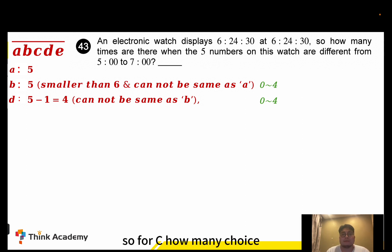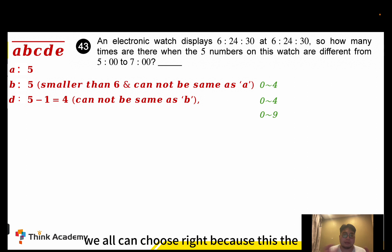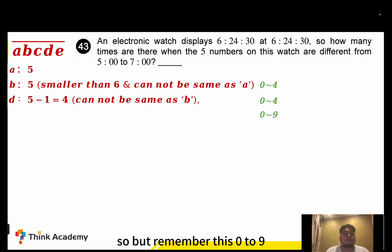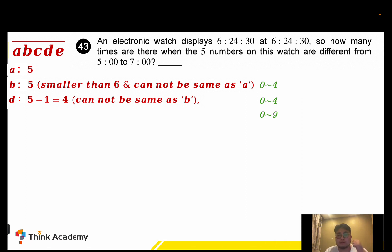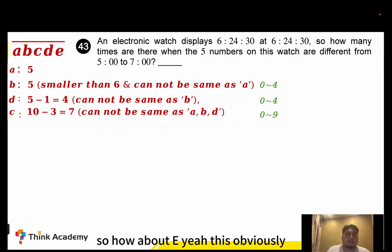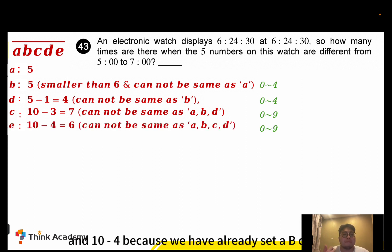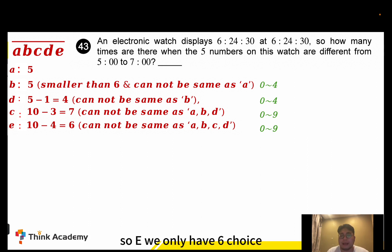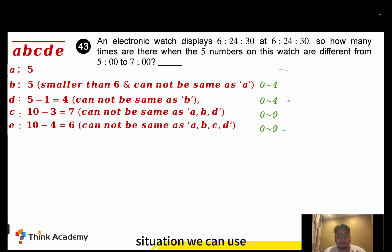For C, we can choose from zero to nine — ten numbers total — but we've already set A, B, and D, so we have ten minus three equals seven choices. For E, we also choose from zero to nine, but ten minus four equals six choices, since A, B, C, and D are already set.